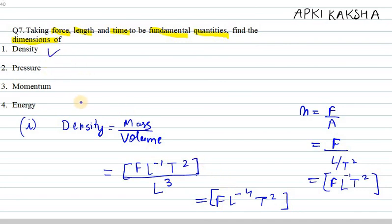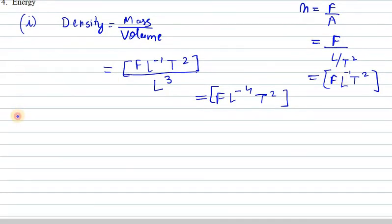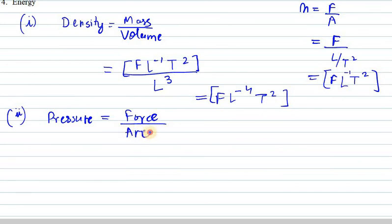The second one is pressure. Pressure we know is force over area. Force can be written as F, and area can be written as L squared, so pressure is FL⁻².